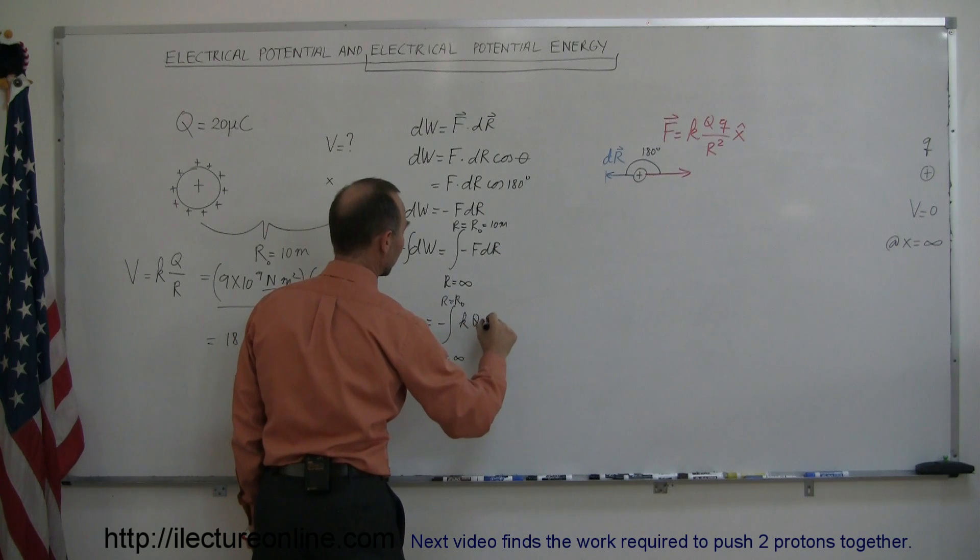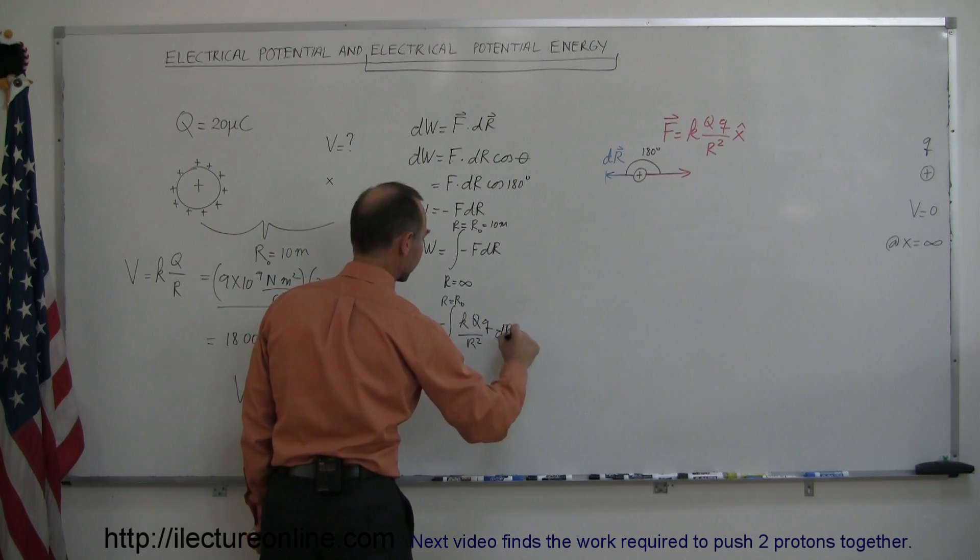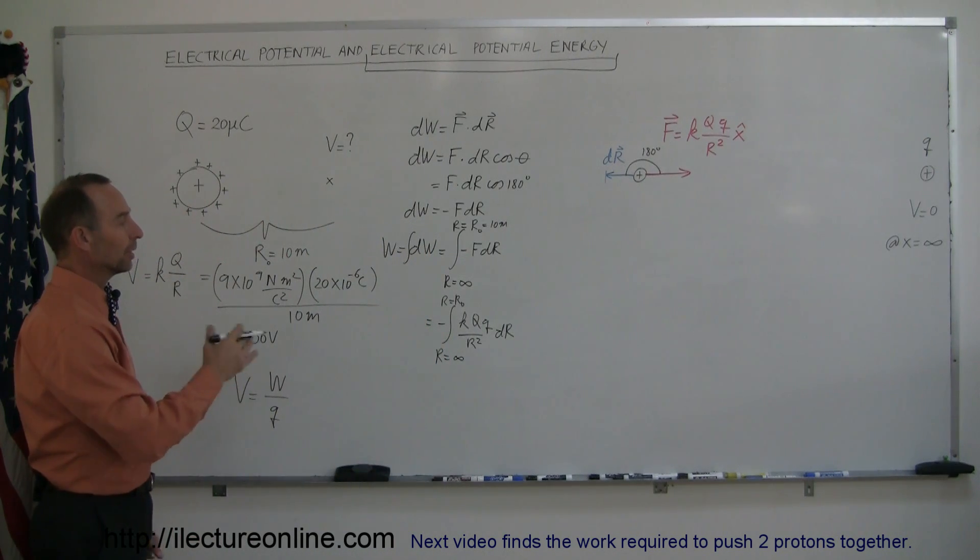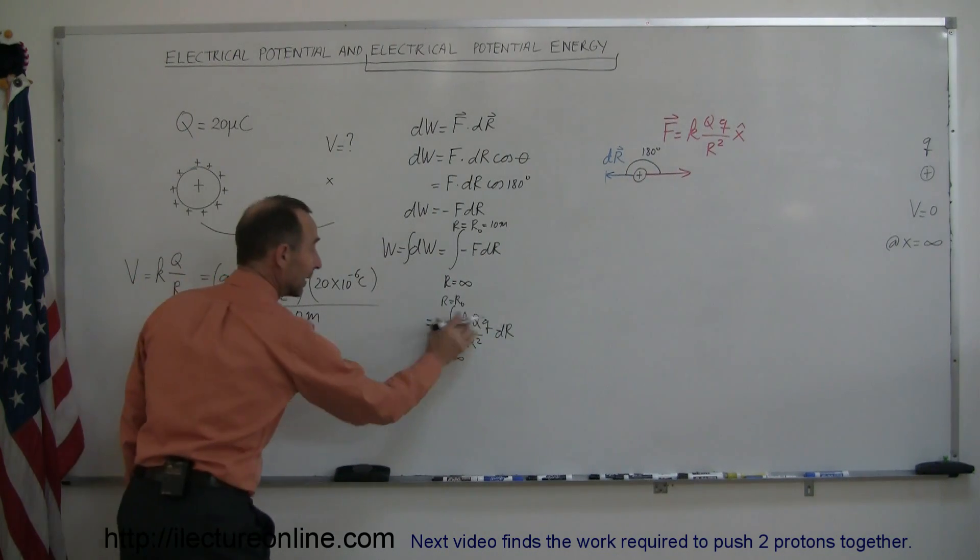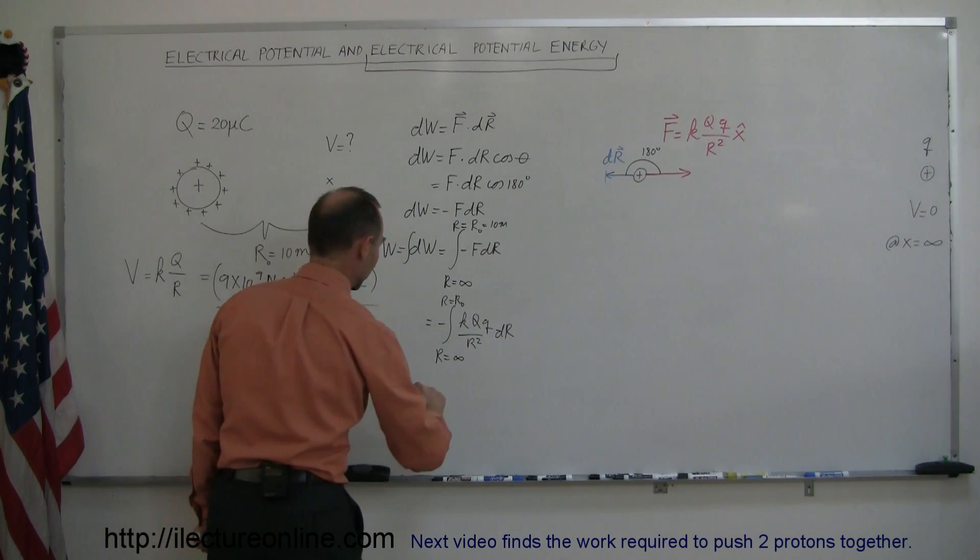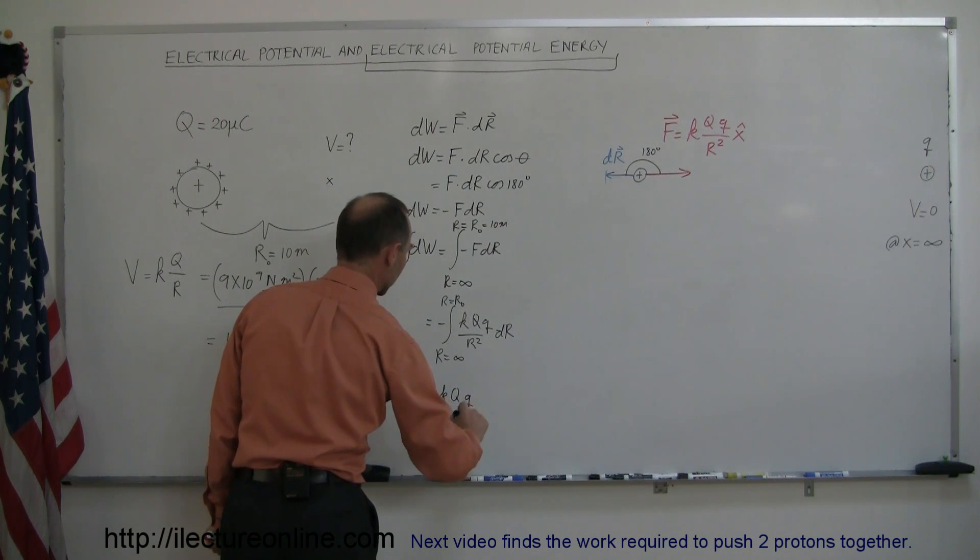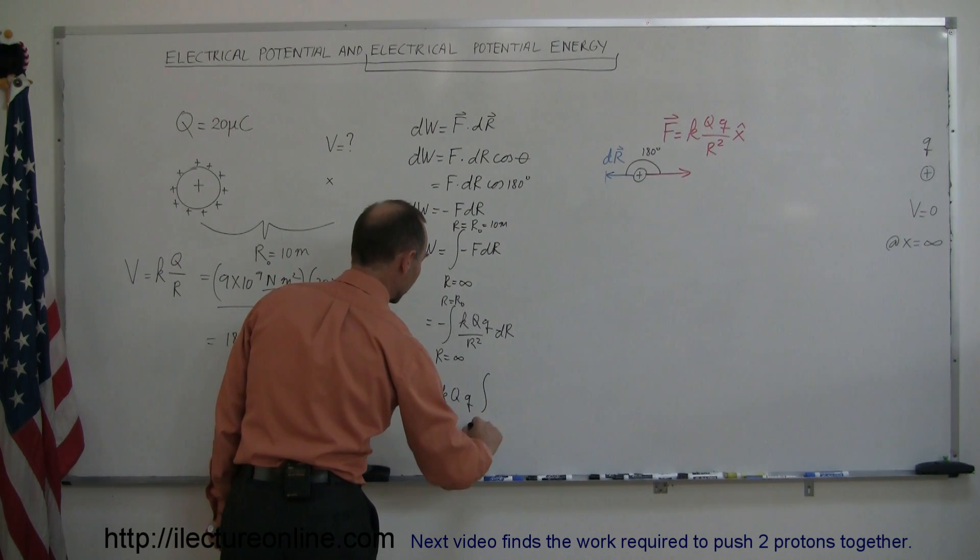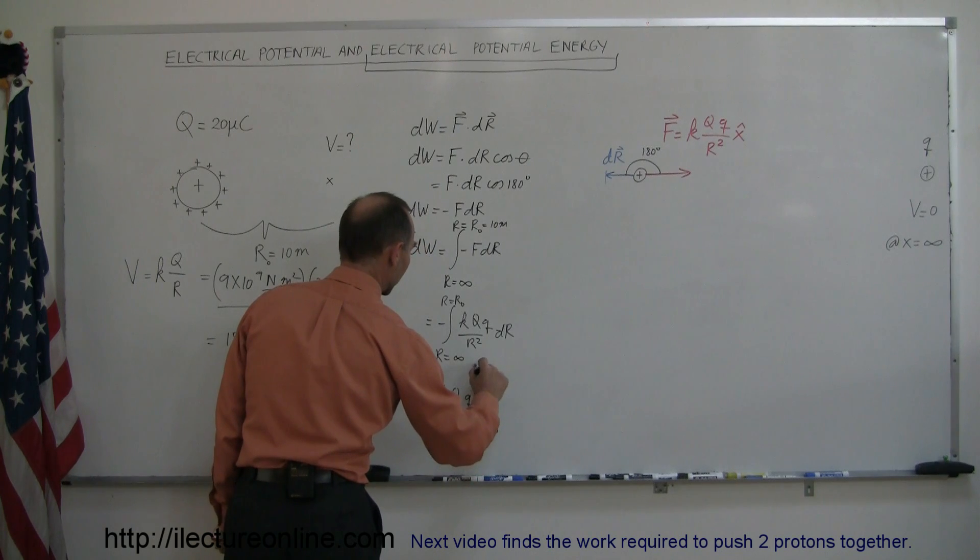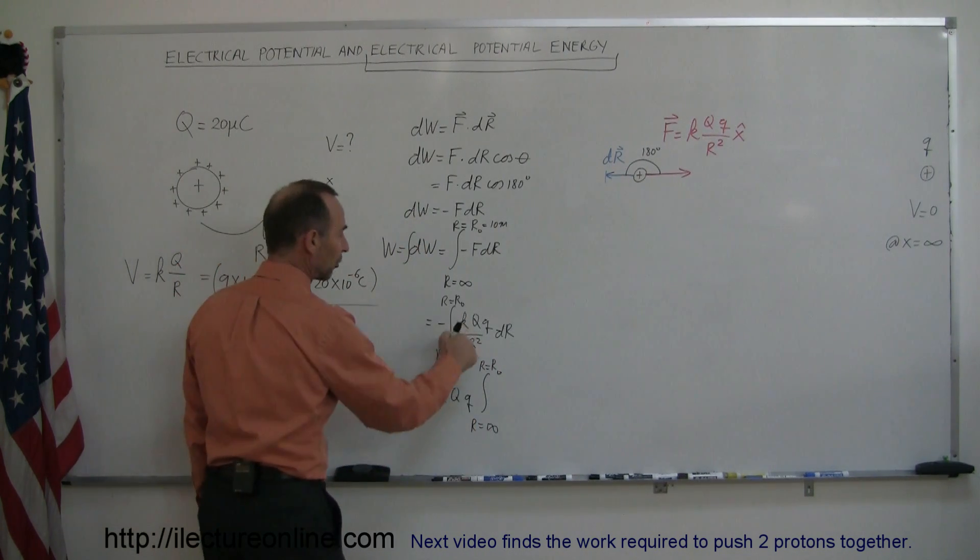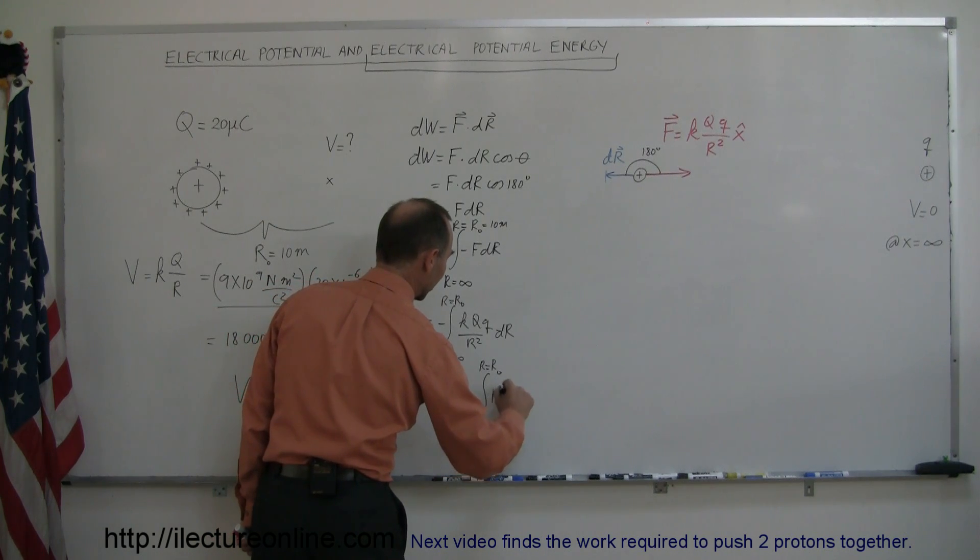Then we realize that k, q and little q are all constants, so we can move that outside integral sign, so this becomes equal to minus k q little q times the integral from r equals infinity to r equals the spot we want to be, and then 1 over r squared is the same as saying r to negative 2 dr.